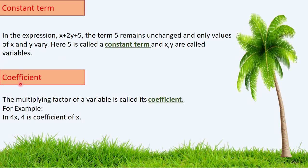Coefficient: the multiplying factor of a variable is called its coefficient. For example, in 4x — that is 4 times x — the number 4 is the coefficient of x, because 4 is the multiplying factor of the variable x.